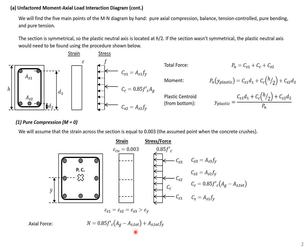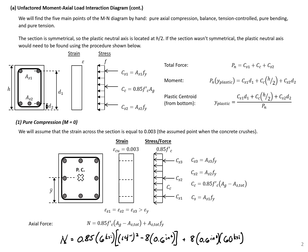Adding our concrete and steel components gives the total axial force at this point. Our total axial force N equals 0.85 times f'c (6 ksi) times the gross area (14 inches squared), minus 8 bars with area 0.6 in², plus 8 times 0.6 times the yield strength of 60 ksi. This gives a total axial force of 1,263.1 kips — our axial load at the pure compression point.